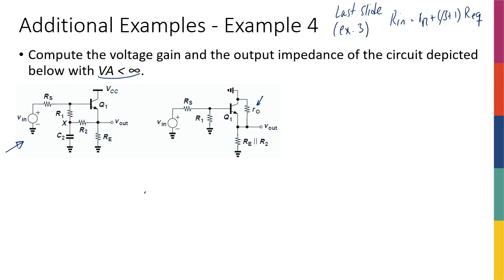Knowing that in AC analysis this capacitor becomes a short circuit, things simplify: R2 is now between the emitter and ground, so it's in parallel with Re — both are between emitter and ground. R1 becomes from base to ground. So the circuit looks more familiar now. R_naught is just there to remind us we have it in the AC analysis; it's not a real physical resistor.